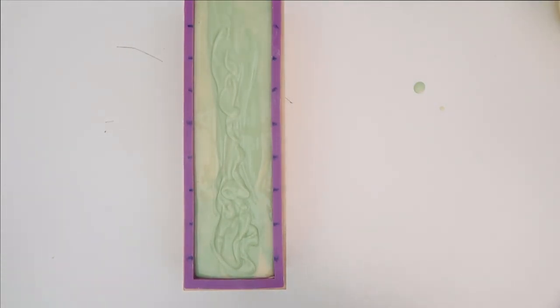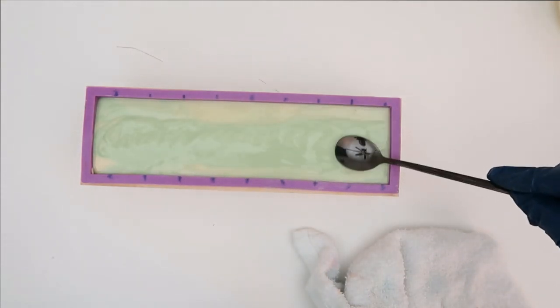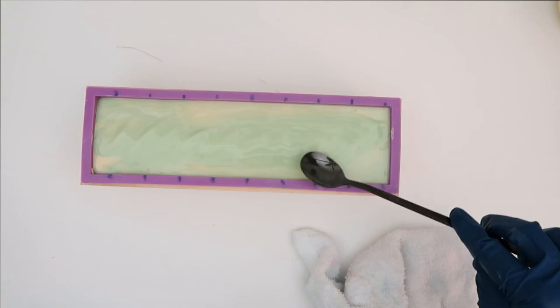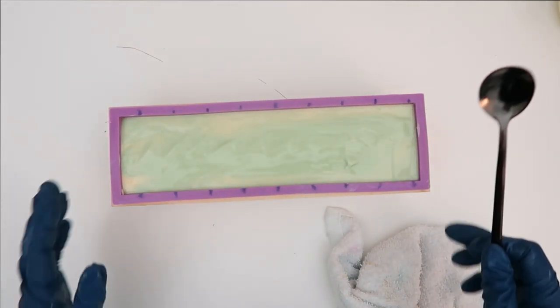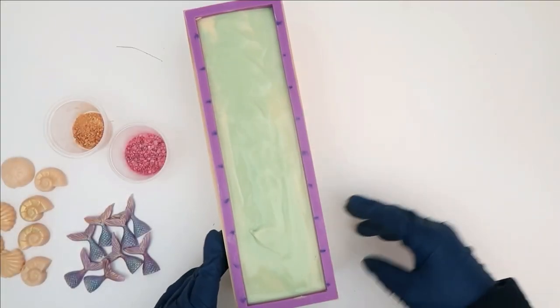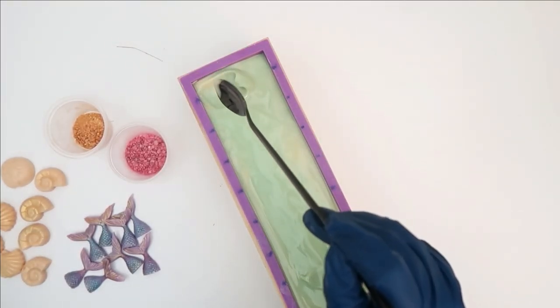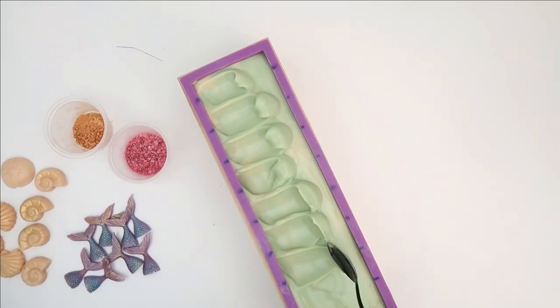Now the fun part - we have the embeds. For the embeds I have some mermaid tails, some seashells, I also have some sprinkles. I have a bunch of fun things that we can use in this soap. But first I'm going to wait a little bit for the top to be a little bit firmer. Then we're gonna add the embeds and things for the top. Let's just make kind of like a wave. Doesn't have to be perfect, remember, have fun with the process.